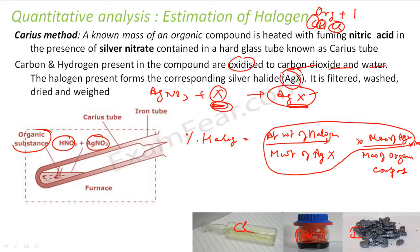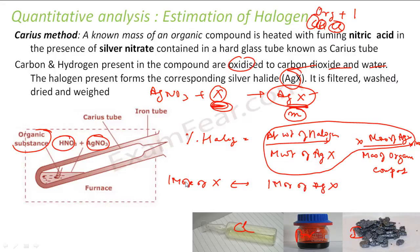Let me show you. Suppose M grams of AgX was formed. We know that one mole of X gives one mole of AgX. So the molecular weight of X corresponds to the molecular weight of AgX.